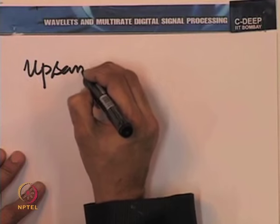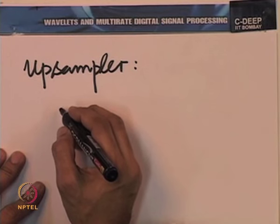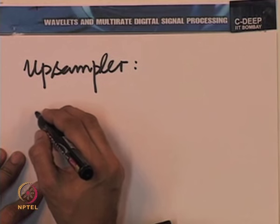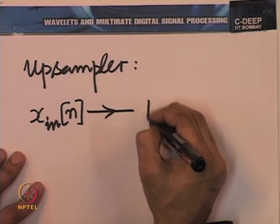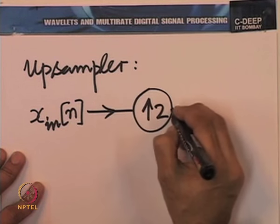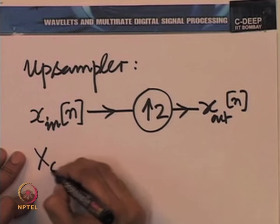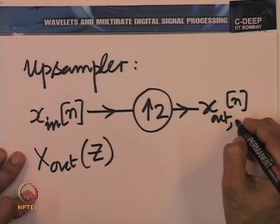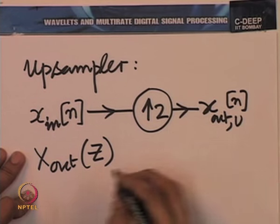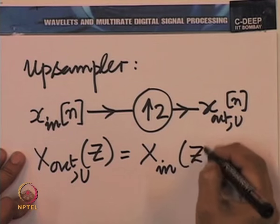Let us look at the up sampler first, recalling from the previous lecture. If you have x_in(n) going to an up sampler by a factor of 2 to produce x_out(n), then X_out(z) — we could say X_out_u(z) to denote up sampling — is X_in(z²) in this case.